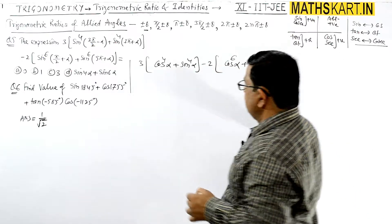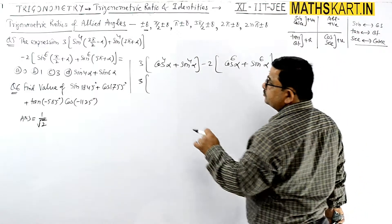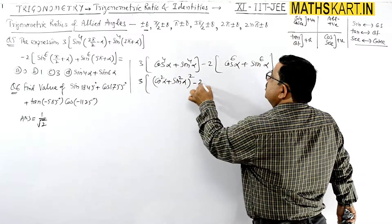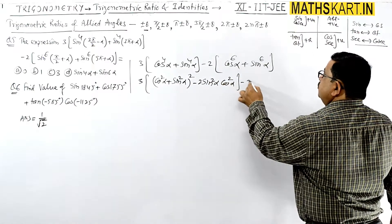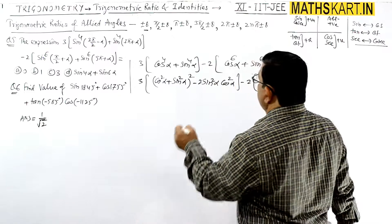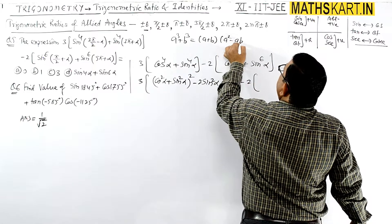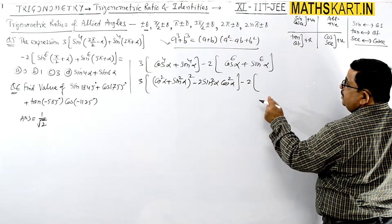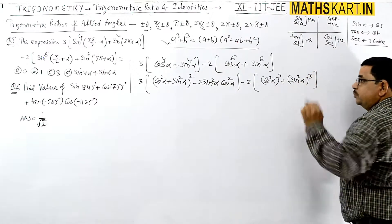So this is cos^6 α plus sin^6 α plus sin^6 α. Now we can simplify this value. That can be written as (cos^2 α + sin^2 α)^2 minus 2 sin^2 α cos^2 α. We will use the formula a^3 + b^3 which is a + b into a^2 - ab + b^2.